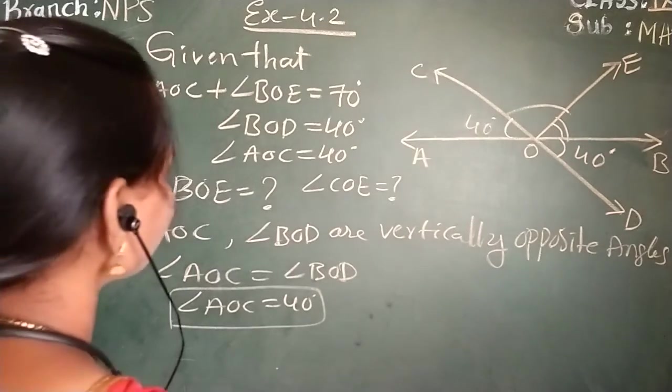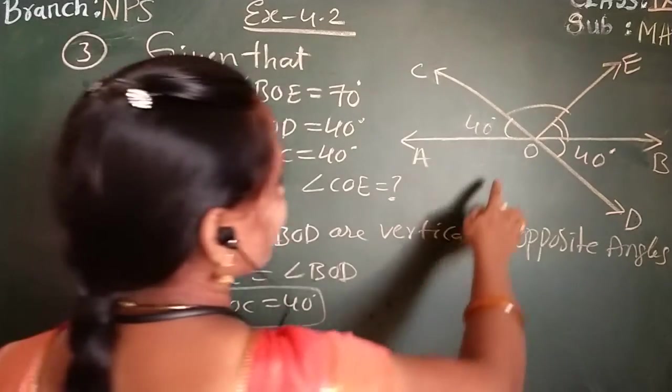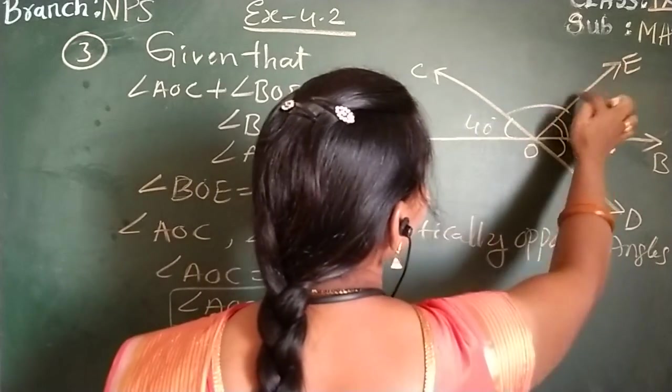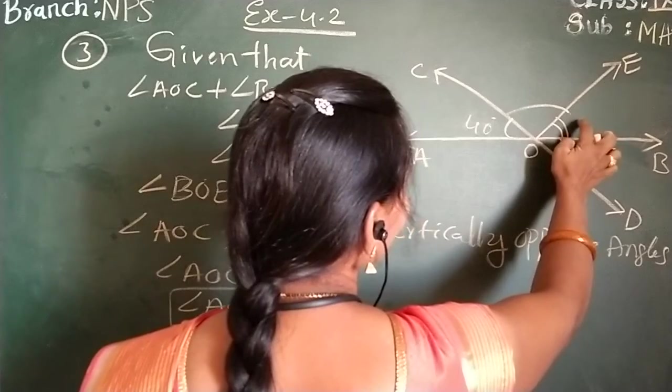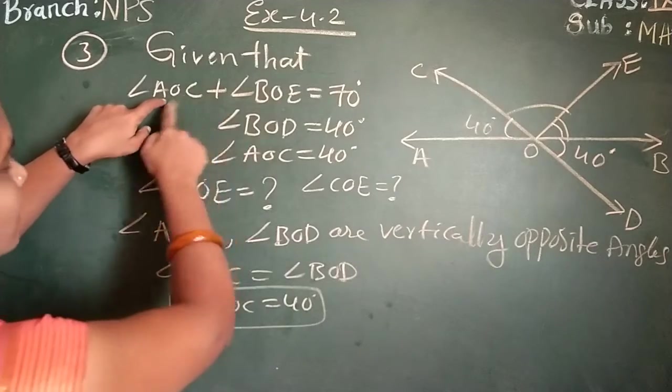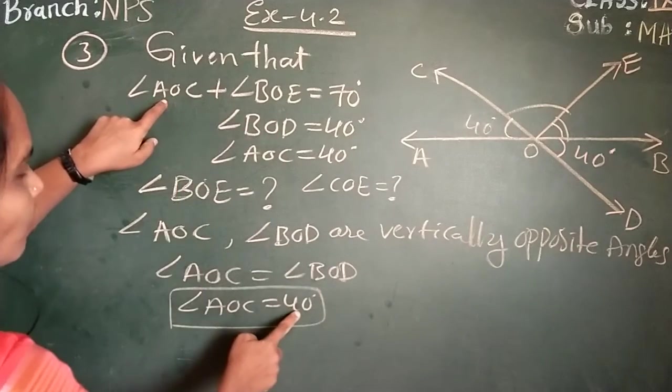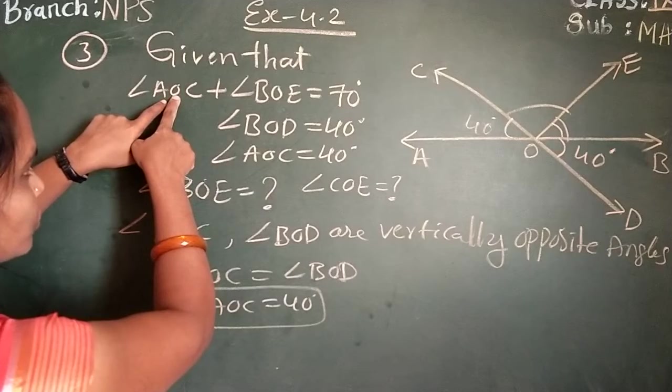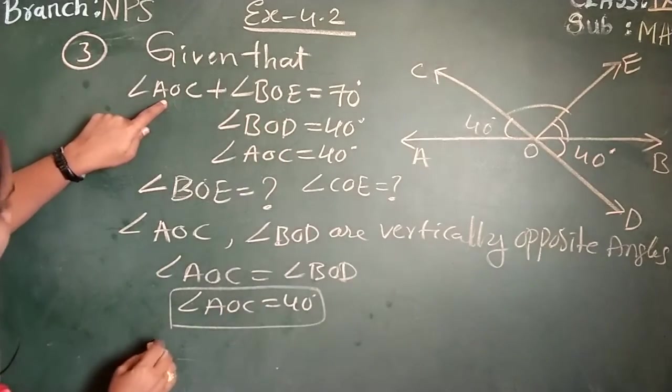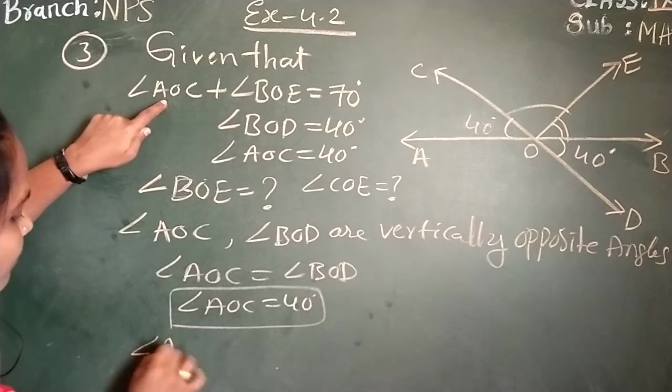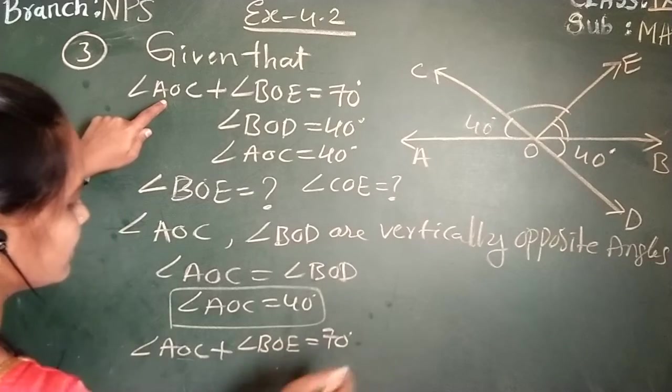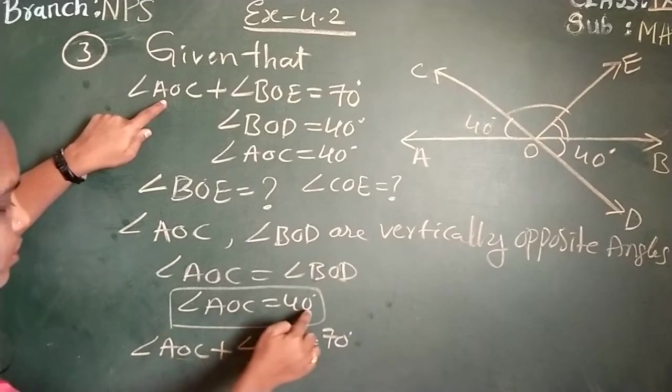After that, now we have to find out angle BOE. This angle we need to find out. How you can get that angle? Now, see here in this relation, angle AOC already we know is 40. You have to substitute AOC, you have to substitute BOD. That only I am taking here. Angle AOC plus angle BOE equals 70 degrees.